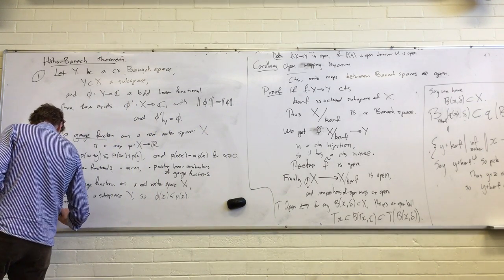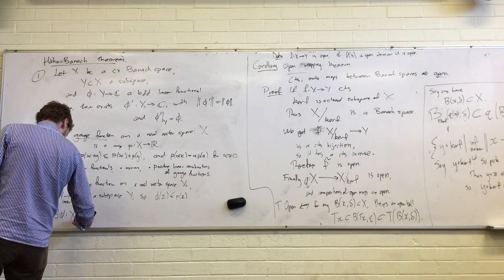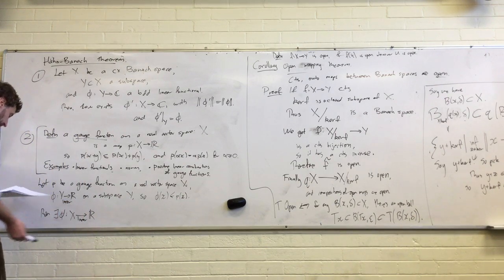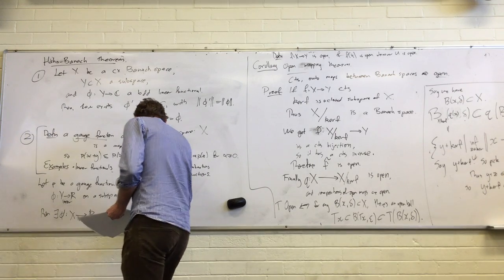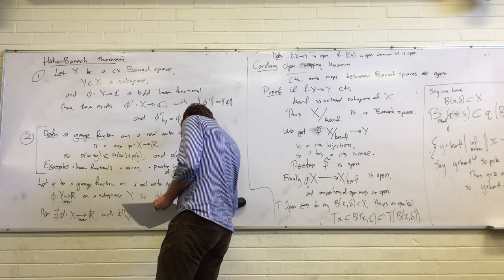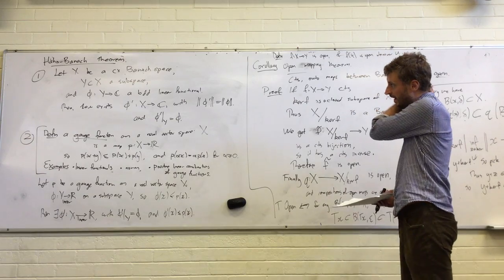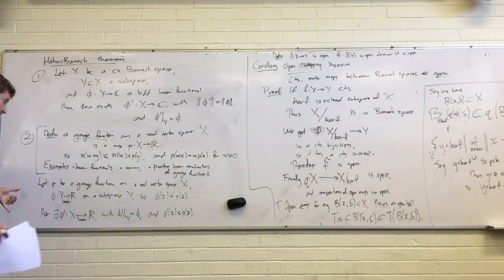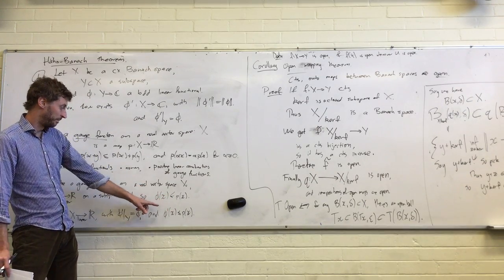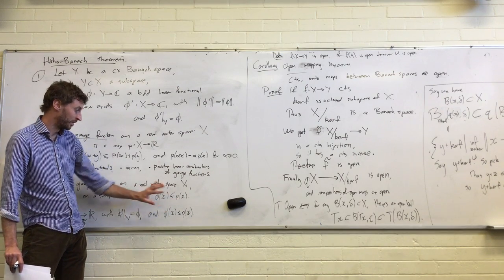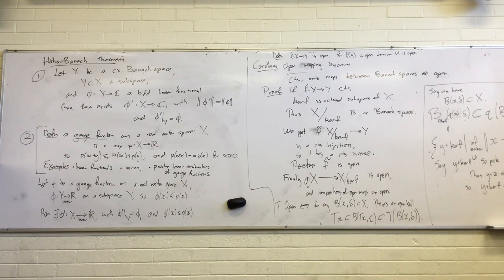And so the Hahn-Banach theorem for real vector spaces says: given a gauge function p on a real vector space X, and a real linear functional phi on a subspace Y, with phi bounded by the gauge function, then there exists phi prime defined on the whole real vector space, with phi prime restricted to Y being phi, and phi prime of x still bounded by the gauge function. There's no topology whatsoever in this statement — we're doing all control by controlling things by some arbitrary gauge function.